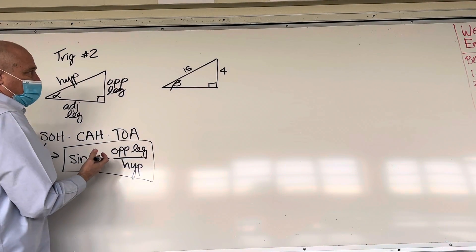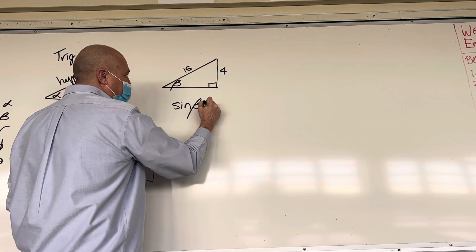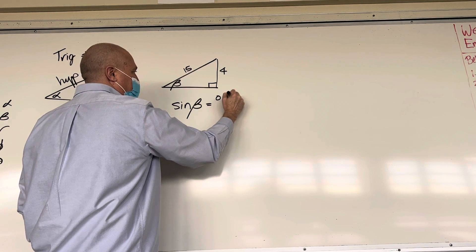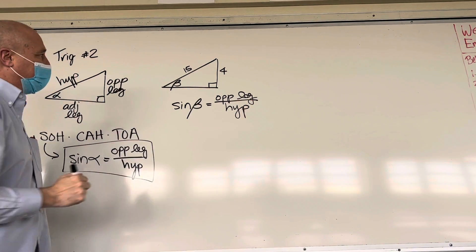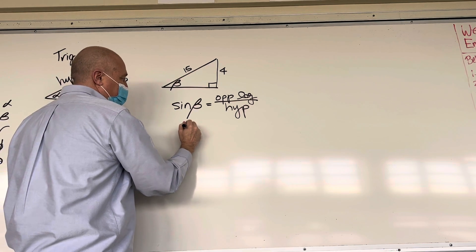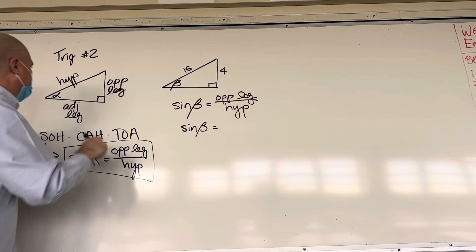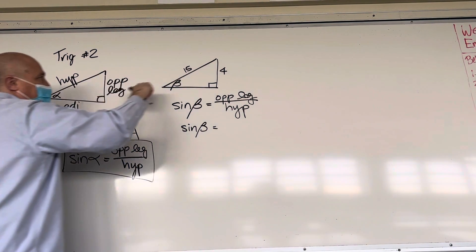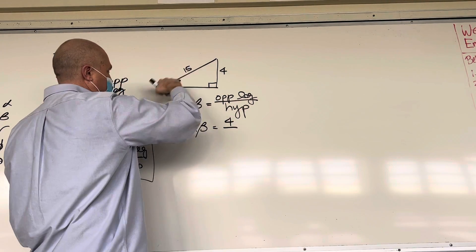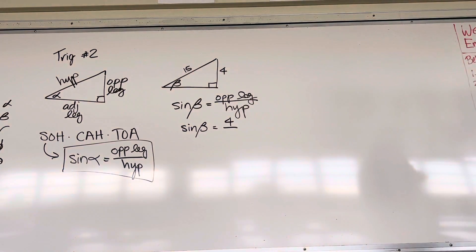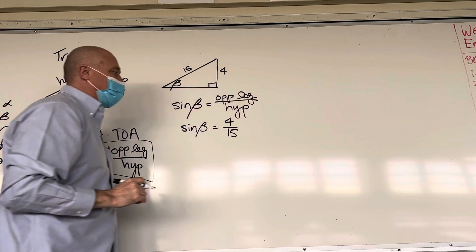So now we'll drop in the generic sine function. We'll say sine of, in this case, since we're using beta, we'll put beta here, equals the op-leg over the hypotenuse. We don't know what the angle is, so it remains sine beta. The opposite leg is over here in this location. So 4 goes into the top of the fraction, the numerator position, and 15 is the denominator here.